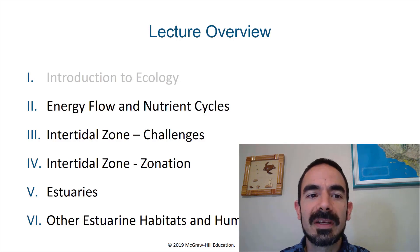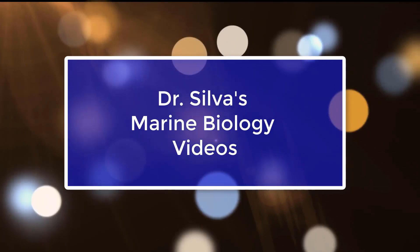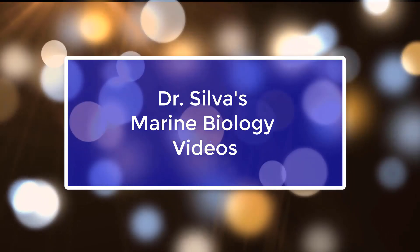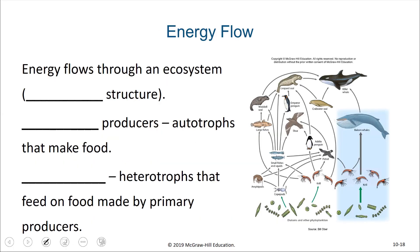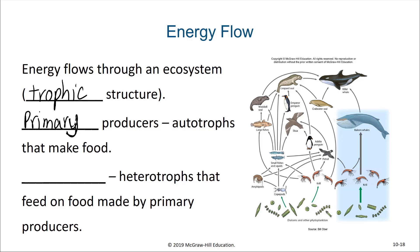Hello, marine biology students. In this video, we're going to talk about energy flow and nutrient cycles within ecosystems. Energy flows through an ecosystem, and we call this flow of energy the trophic structure. It is driven by primary producers — these are the organisms that generate food, usually from some external energy source, whether it's from a light source or a chemical source. The primary producers are the autotrophs that make the food.